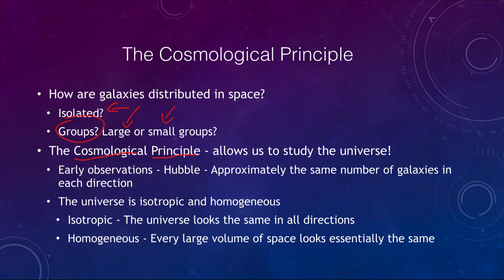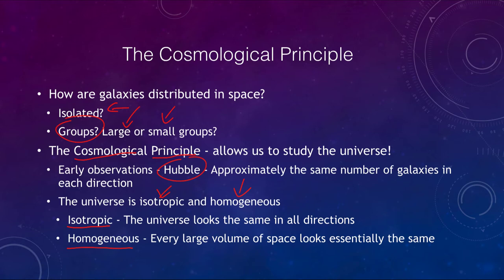The cosmological principle states that the universe is isotropic and homogeneous. Isotropic means that the universe looks the same in all directions. Homogeneous means that every large chunk of space looks essentially the same — if you take a very big area of space, it should look exactly the same as another similarly sized area elsewhere in the universe. Early observations by Hubble showed that approximately the same number of galaxies were found in any direction, supporting the idea that the universe is isotropic.